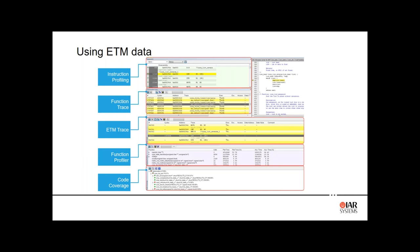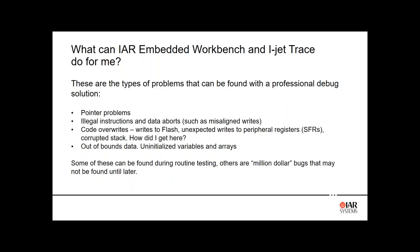With the embedded trace macro cell, you get all instructions being executed, detailed function trace, a very detailed function profile — it's not sampled, it's 100% of instructions. With streaming trace it continuously collects and displays information for as long as you run the application. Code coverage is also more accurate. Some of these capabilities you can already get with iJet using SWO as sampled data.